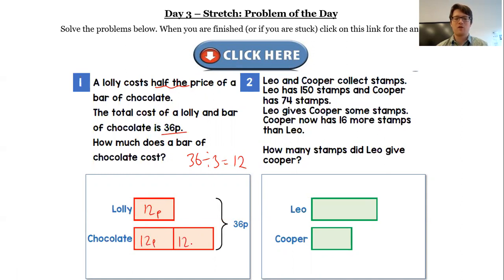So each little box here is worth 12p, so then I can really clearly see that a chocolate bar is two groups of 12p. 12 by 12 is 24 pence.